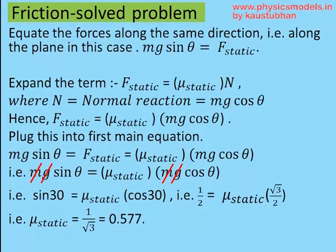So we equate Mg sin θ and F_static, which is the static friction force. Now expanding the static friction force, that's equal to μ into N. And we must be careful here to put μ_static. Now the N, which is normal reaction itself, is equal to Mg cos θ. Please look at the triangle.